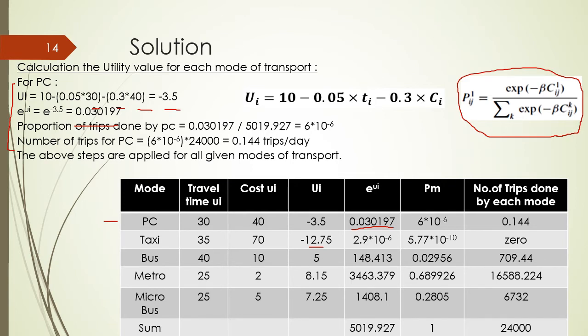What we need at the end is the number of trips done by each mode. To get 0.144, multiply 6 × 10^(−6) by the total number of trips, which is 24,000. The same is done for the next transport modes — for example, for the bus, multiply 0.02956 by 24,000 to get 709.44. If you sum all proportions you should get 1, and if you sum all trip numbers you get the original 24,000 trips.